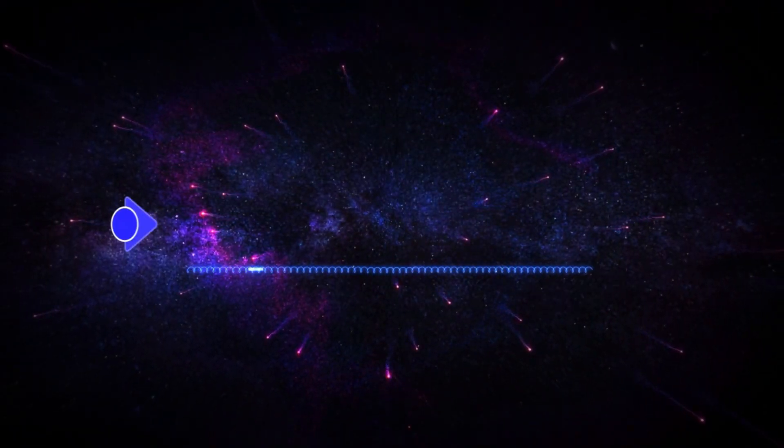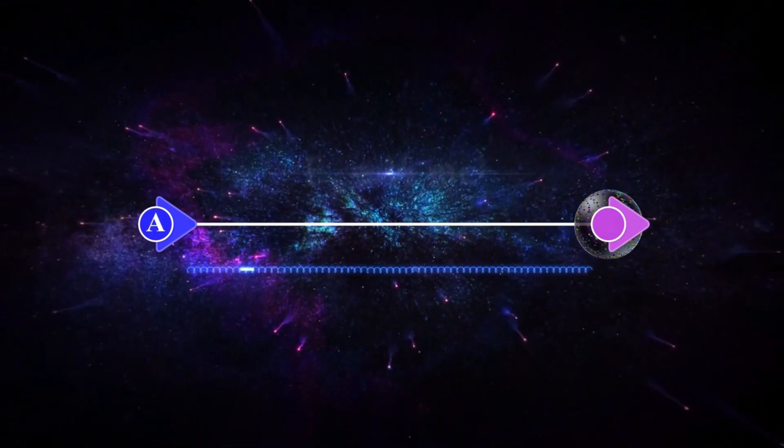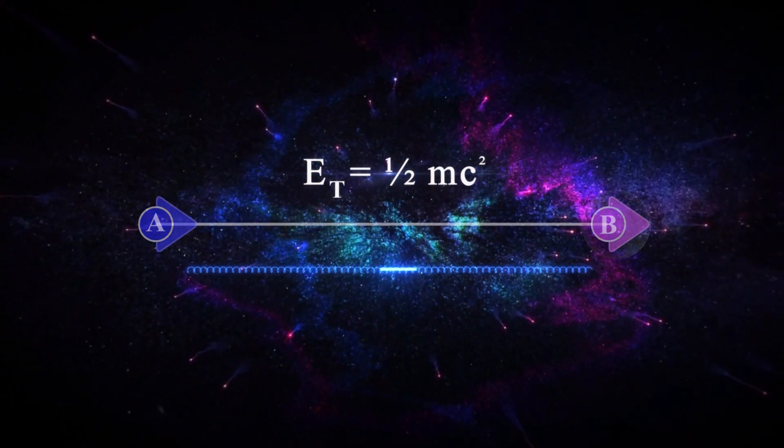But eventually, this photon with constant mass passes the distance between two points by linear velocity c, so its energy is equal to a half mc squared.